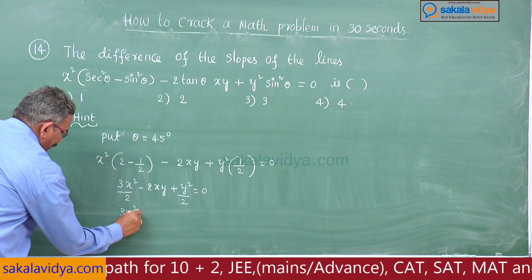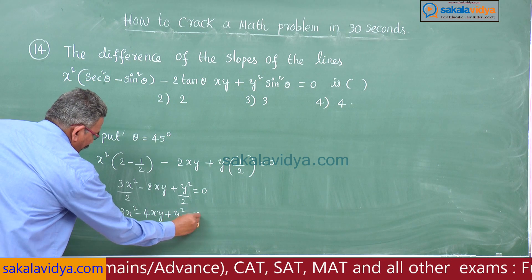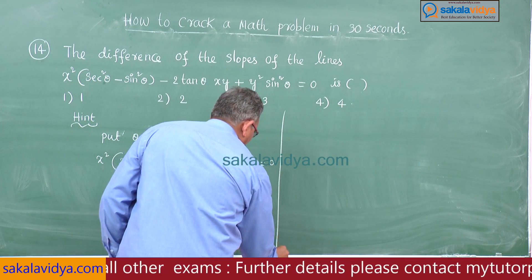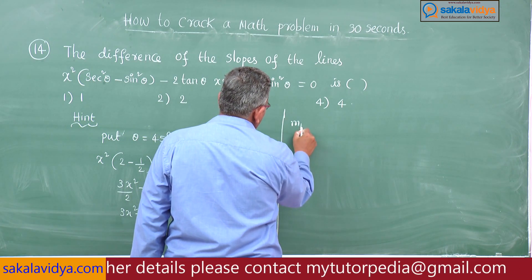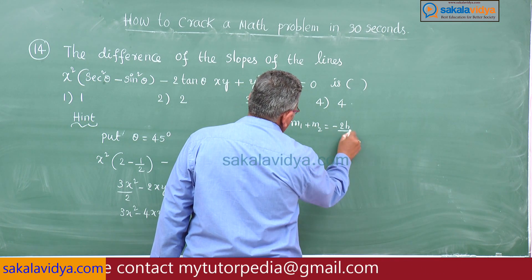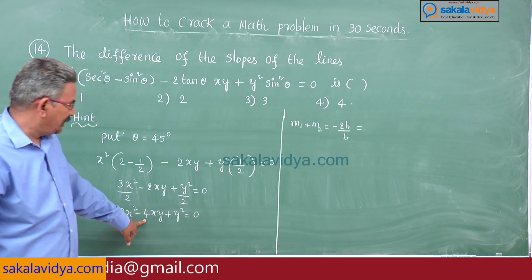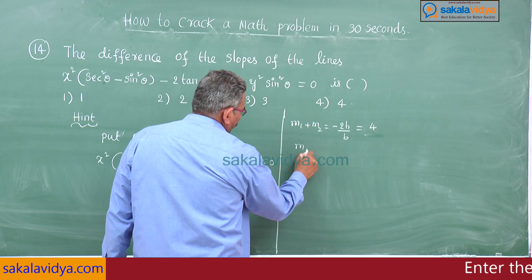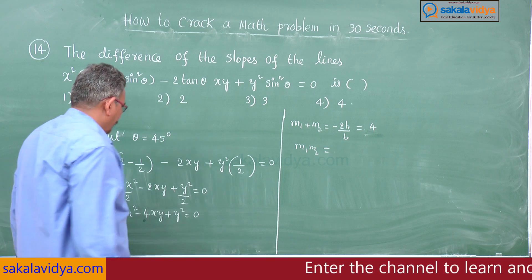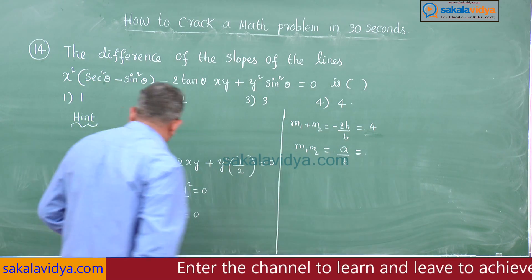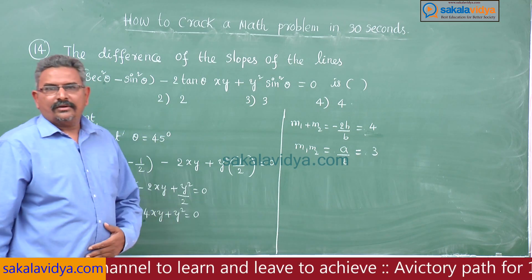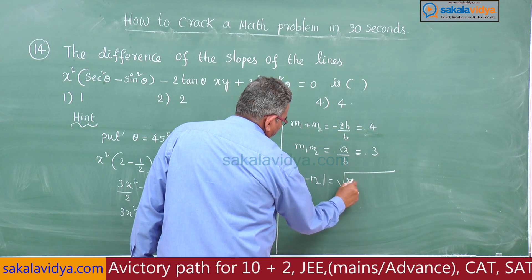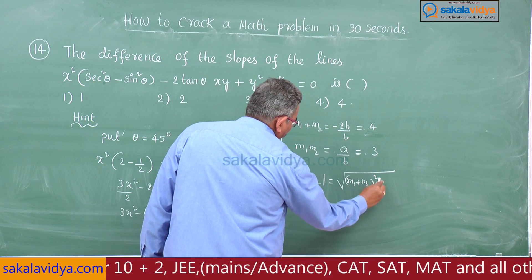So we have 3x² - 4xy + y² = 0. Now we can find |m1 - m2|. We know m1 + m2 = -2h/b. Here -2h = -4, b = 1, so m1 + m2 = 4. And m1·m2 = a/b, where a = 3, b = 1, so m1·m2 = 3. Now |m1 - m2| = √((m1+m2)² - 4·m1·m2).